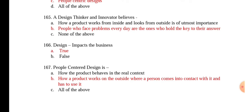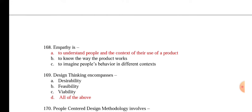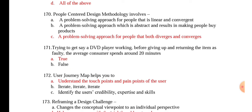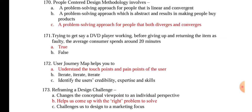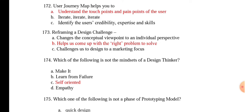Design impacts the business — true. People-centric design is how a product works on the outside where a person comes into contact with it and has to use it. Empathy is to understand the people and the context of their use of a product. Design thinking encompasses desirability, feasibility, and viability — all of the above. People-centric design involves a problem-solving approach for people that both diverges and converges. Trying to get a DVD player working before giving up and returning the item as faulty, the average customer spends around 20 minutes — that is true. User journey maps help you understand the touch points and pain points of the user. Reframing a design challenge helps us come up with the right problem to solve.